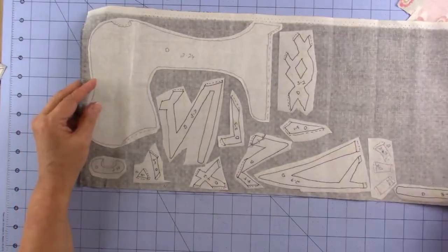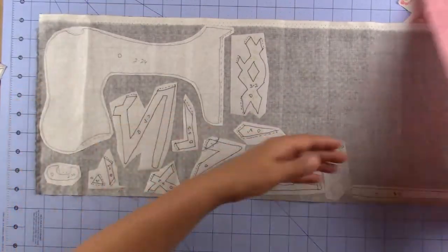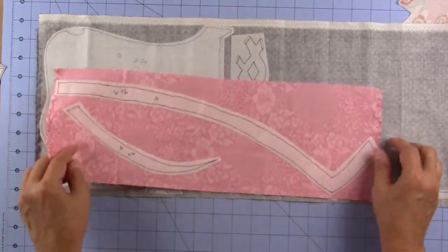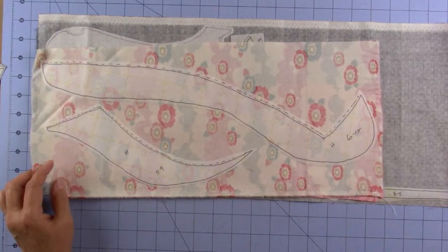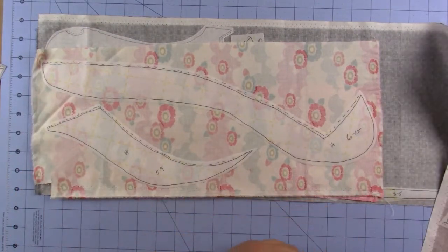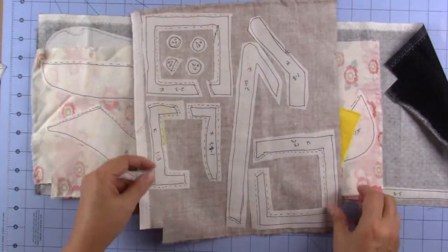Once you're finished, it should look like this. You'll have all the Ds on one fabric, you'll have all the As on one fabric and all the Hs on another fabric and so on. Some fabrics will only have one or two pieces. Some will have a lot of pieces.